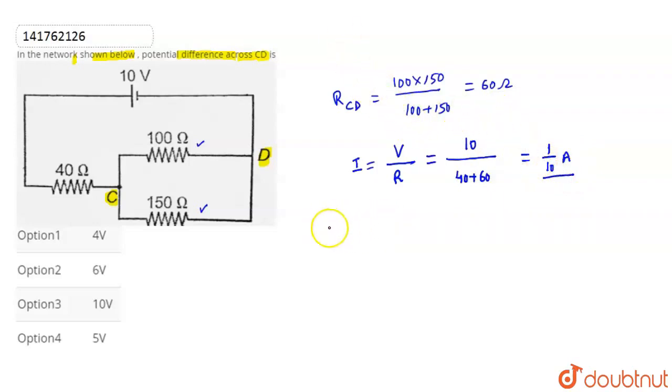Now we can calculate simply the potential difference across CD and that will be equals to current I multiplied by resistance between the terminal CD. So current I is 1 by 10 ampere and RCD is 60 ohm. So from here after solving the potential difference across the CD is equals to 6 volt.